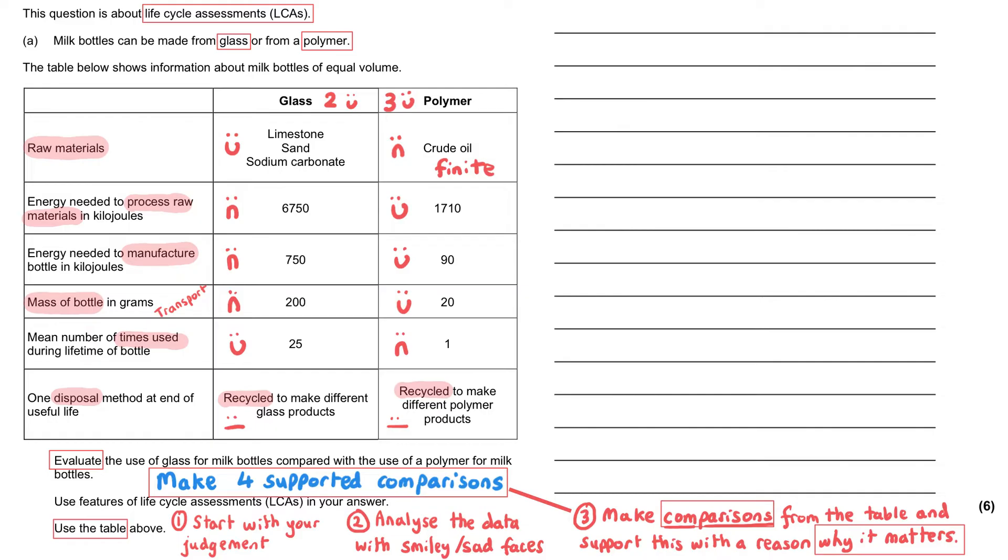I'm going to make a decision that the polymer is the best just because we need to make a decision. I'm picking it because it's got more smiley faces. So you begin with your judgment and your judgment should say that overall, I think that polymer is the best choice for the milk bottle because it has the least impact on the environment. Then we need to support this statement. So let's start with the positives, the reasons why I chose the polymer.